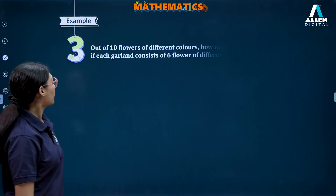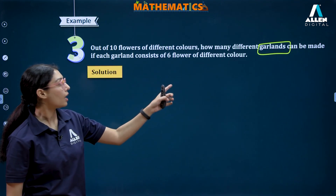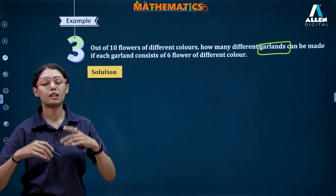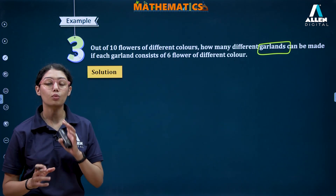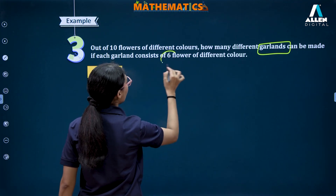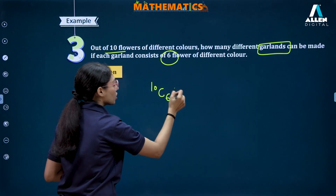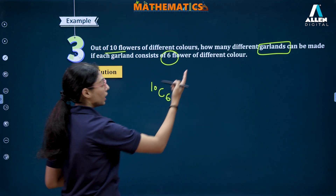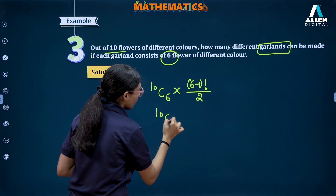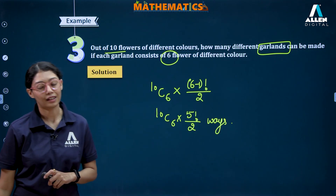Example 3: Out of ten flowers of different colors, how many different garlands can be made with six flowers? For garlands, we do not distinguish between clockwise and anti-clockwise. First, select six flowers from ten: that is ten C six ways. Then arrange them in a circular permutation counting only half: six minus one factorial divided by two, which is five factorial divided by two. Total = ten C six × five factorial divided by two ways.